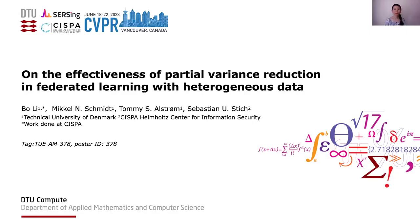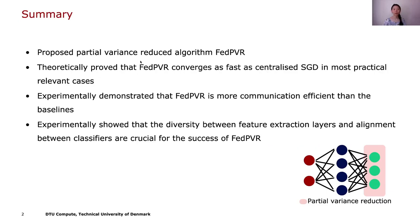Hello everybody, my name is Bo Li. I will present a paper on the effectiveness of partial variance reduction in federated learning with heterogeneous data. This work is a collaboration with Mikko Schmidt, Tony Astrum, and Sebastian Stich. We propose a partial variance reduction algorithm, Par, for dealing with data heterogeneity in federated learning. We theoretically prove that our algorithm can converge as fast as centralized SGD in most practically relevant cases. Furthermore, we experimentally demonstrate that our algorithm is more communicationally efficient than the baseline, and show that diversity between feature extraction layers and alignment between classifiers are crucial for the success of our algorithm.